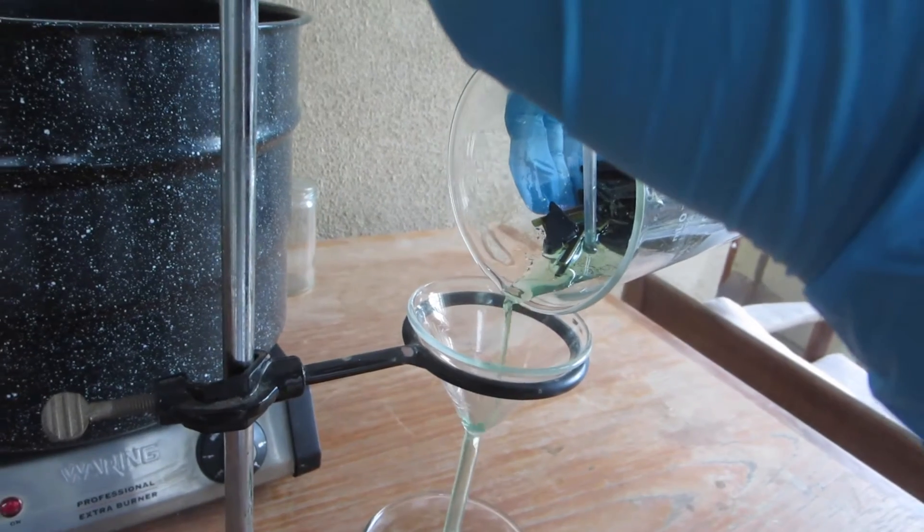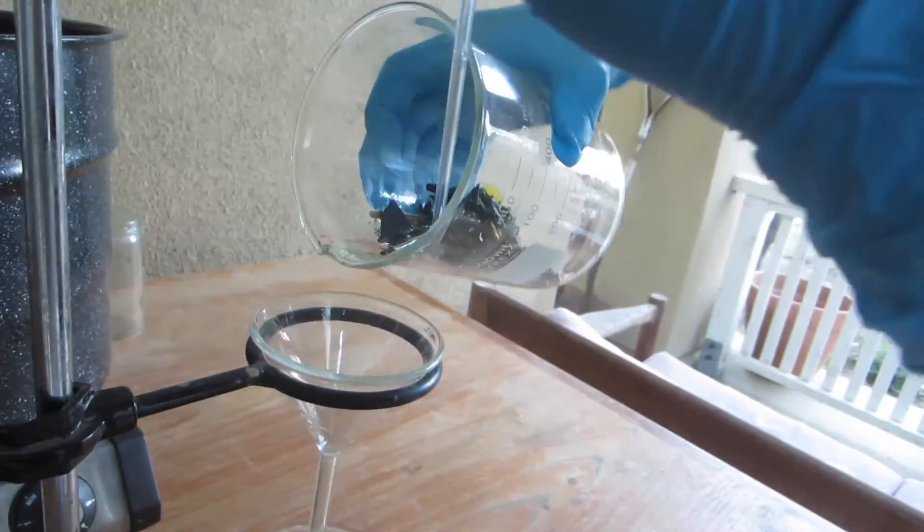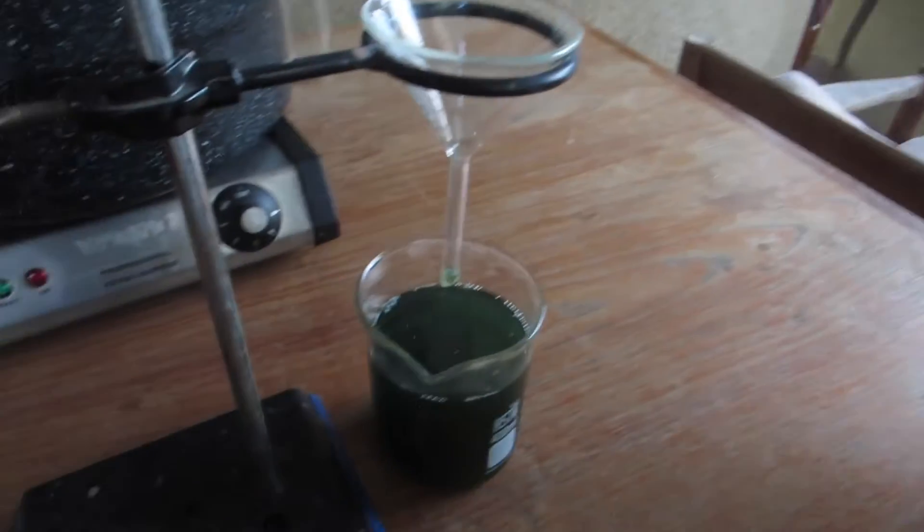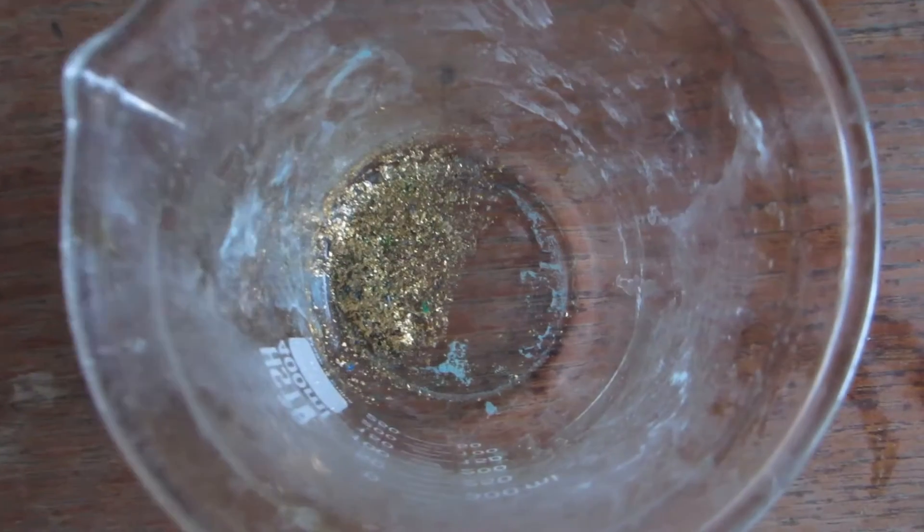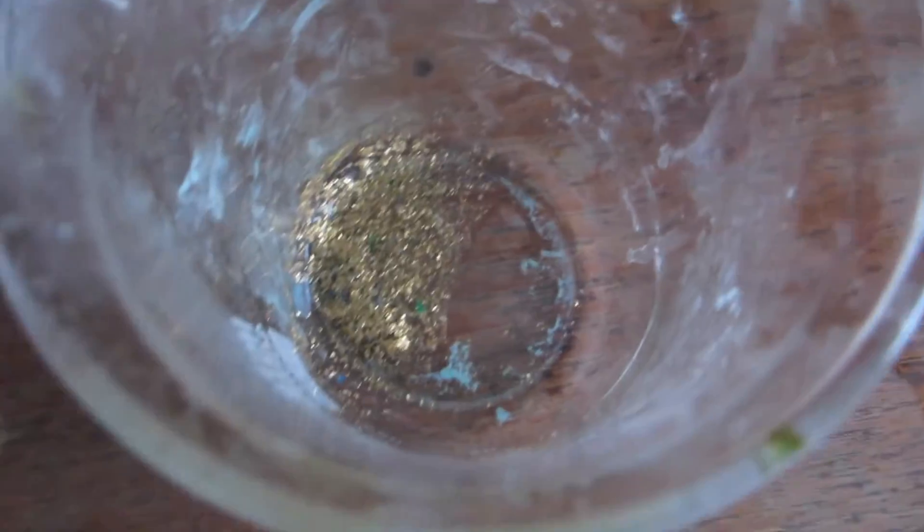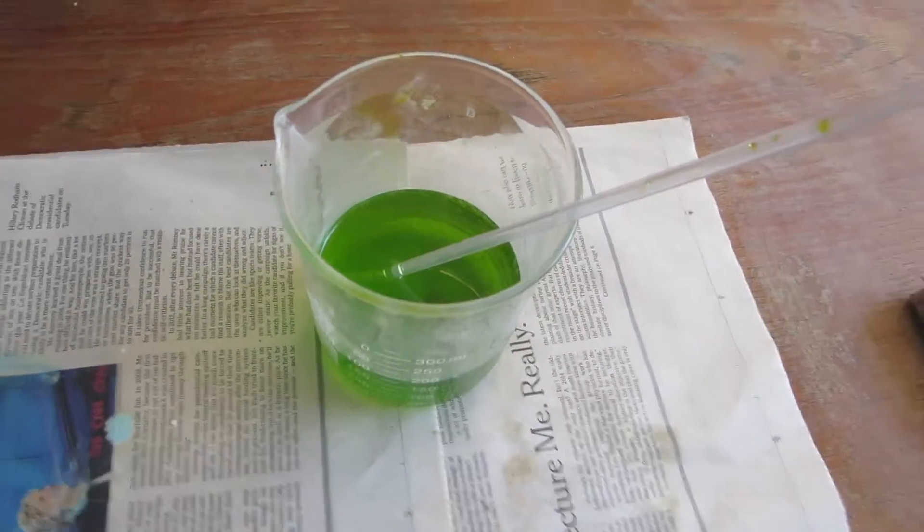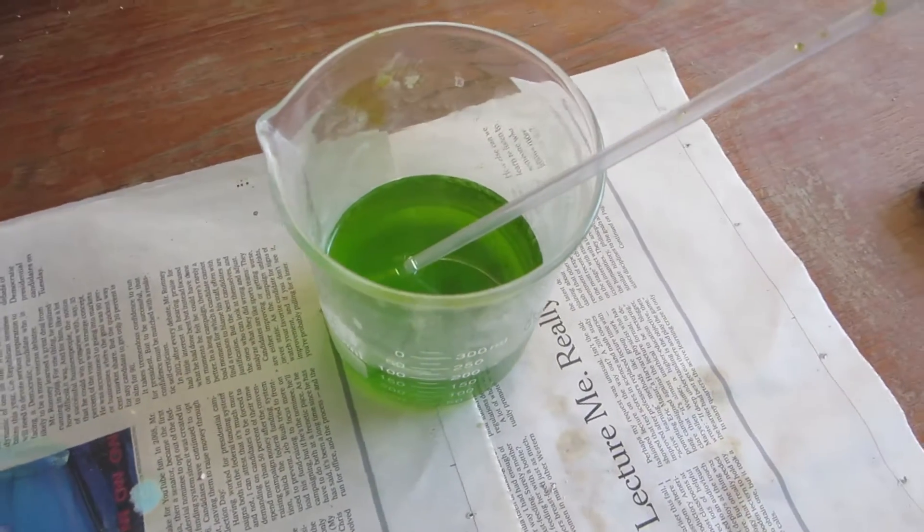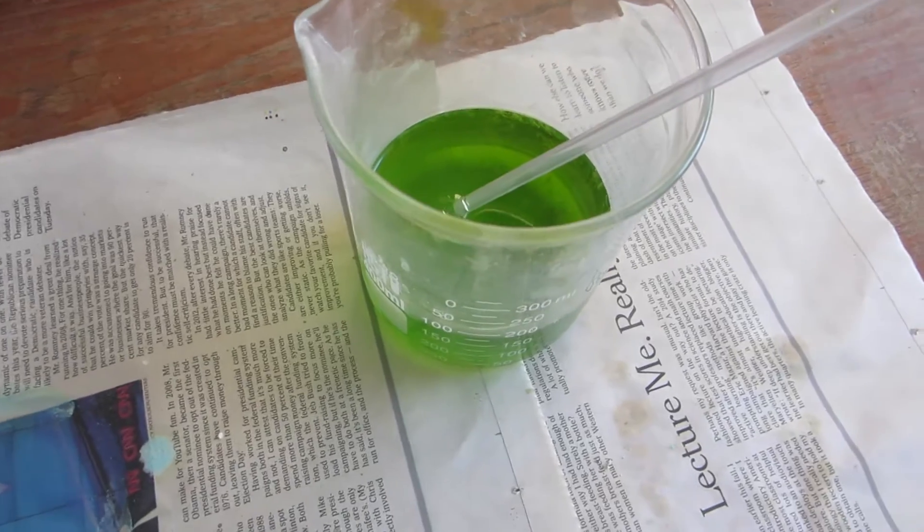I'm going to rinse all the rest out. After getting the water out, this is what the gold solution should look like after dissolving in hydrogen peroxide and hydrochloric acid. It's green from copper impurities.